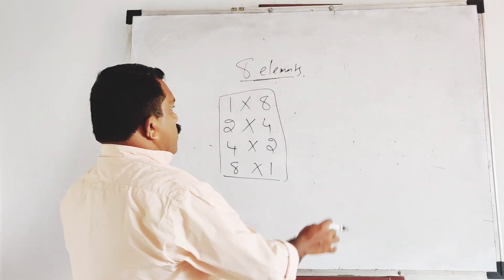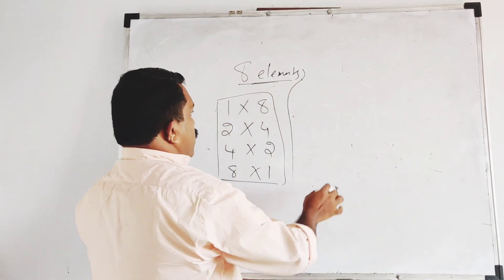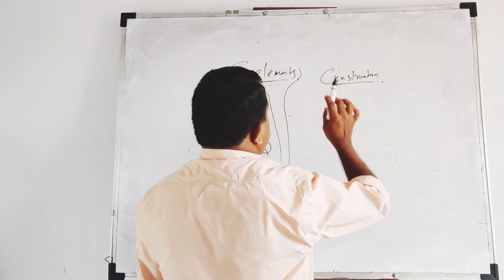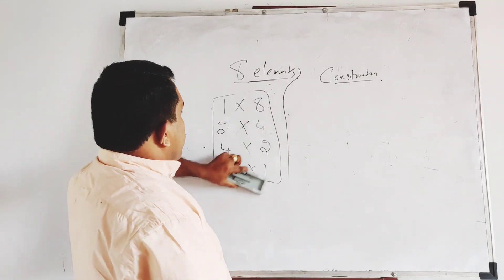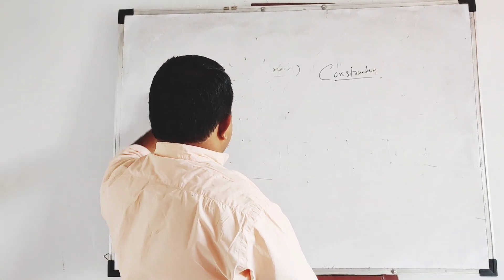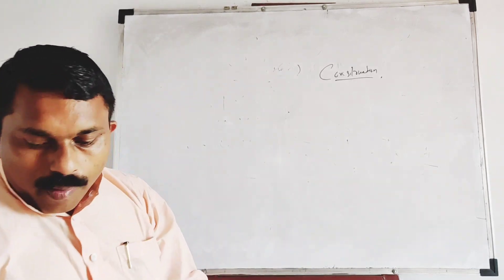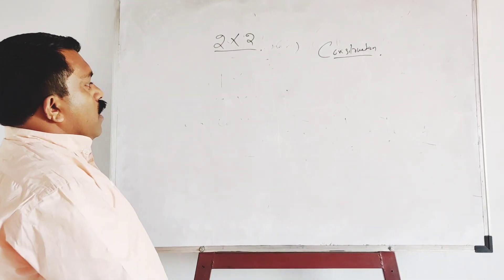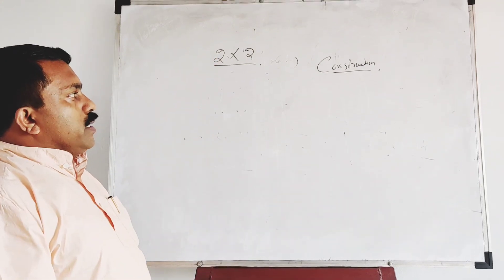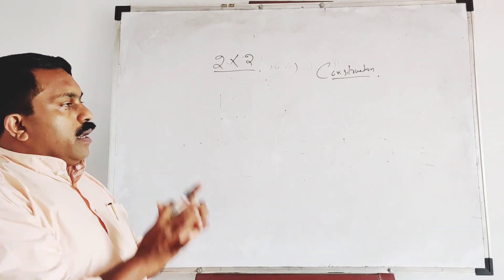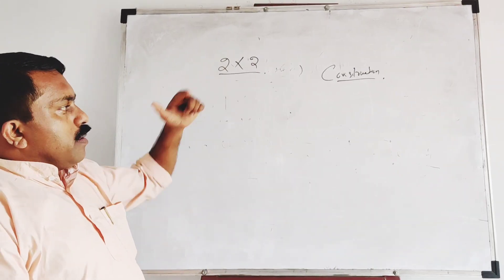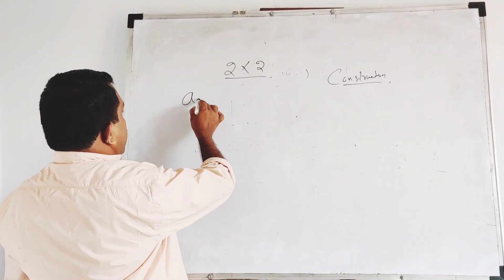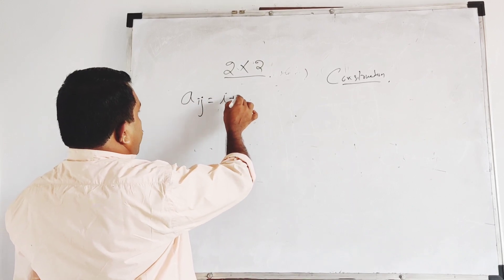Let's start with the elements. Let's start with a matrix — constructing of a matrix. How does a matrix make a matrix? Let's say a 2 by 2 matrix. Let's write about a matrix. This is 4 elements. Let's start. The capture is: aij is equal to i plus j.